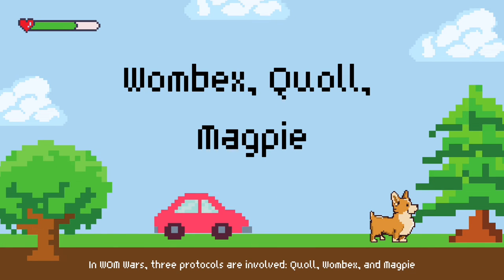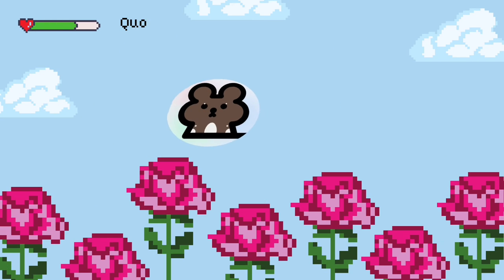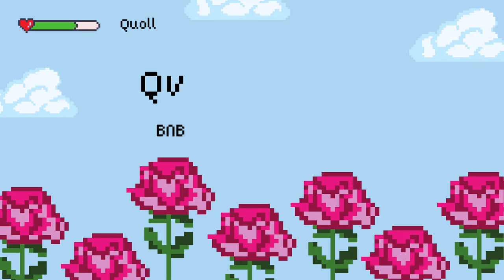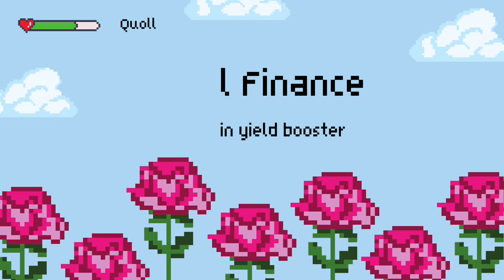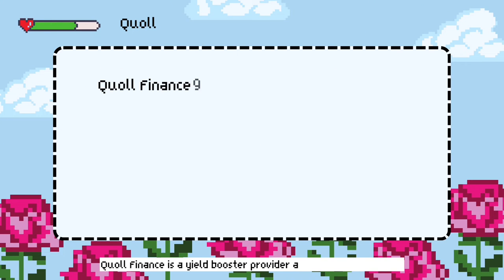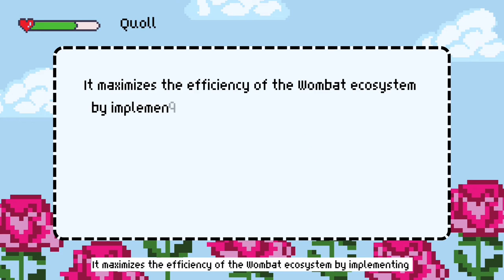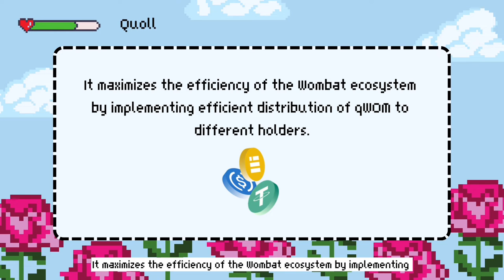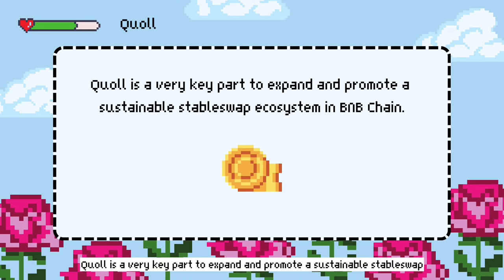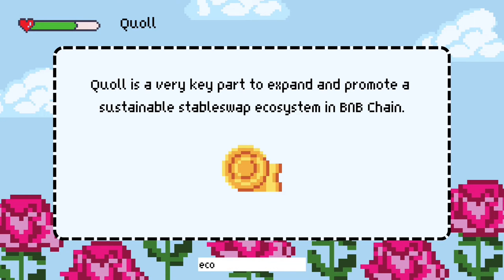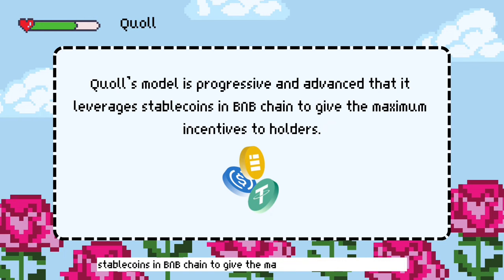In Wom Wars, three protocols are involved: Coal, Wombex, and Magpie. Coal Finance is a BNB chain yield booster — a yield booster provider and on-chain incubator. It maximizes the efficiency of the Wombat ecosystem by implementing efficient distribution of rewards to different holders. Coal is a very key part to expand and promote a sustainable stable swap ecosystem in BNB chain. Coal's model is progressive and advanced, leveraging stable coins in BNB chain to give maximum incentives to holders.